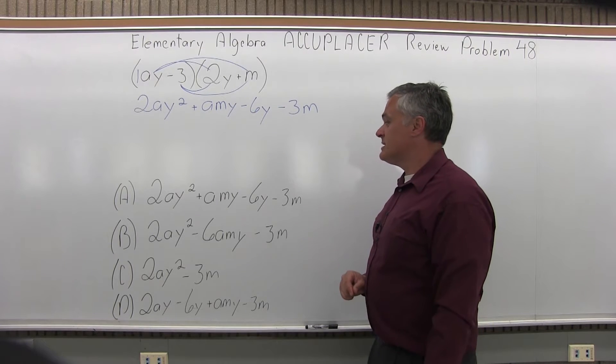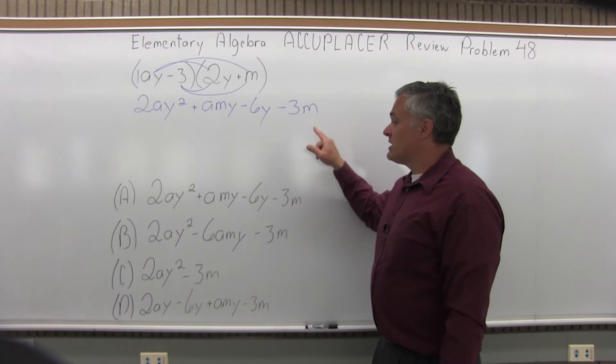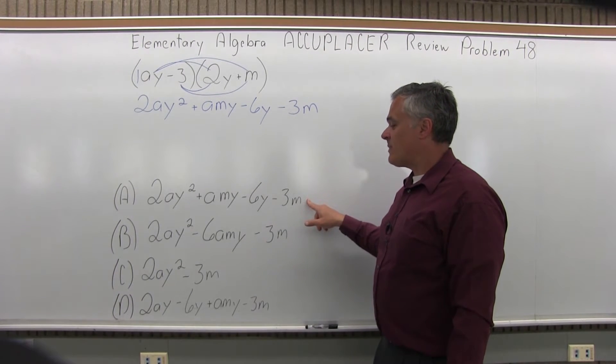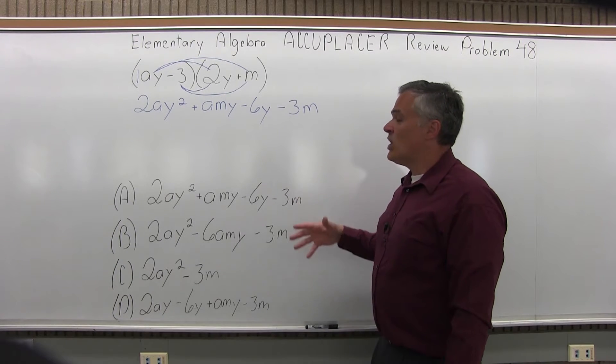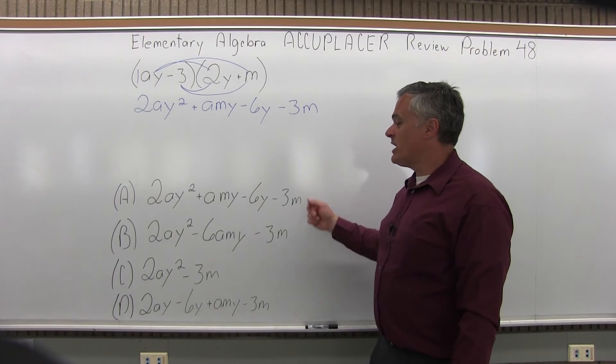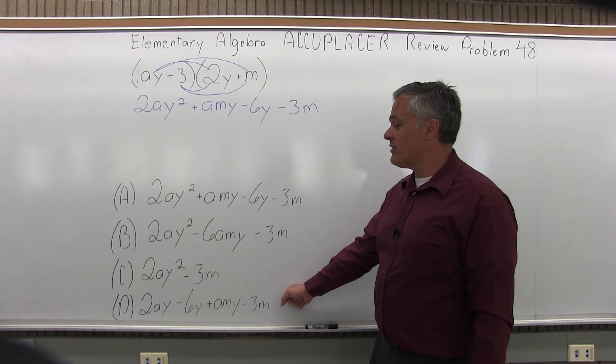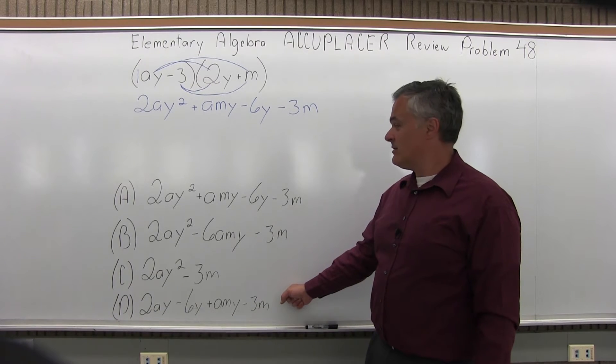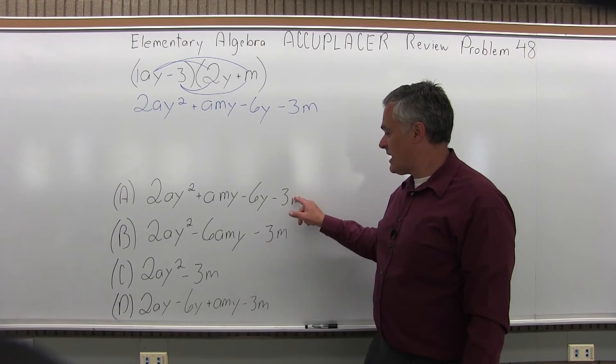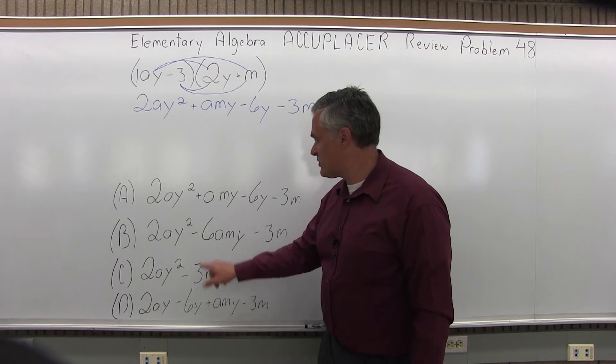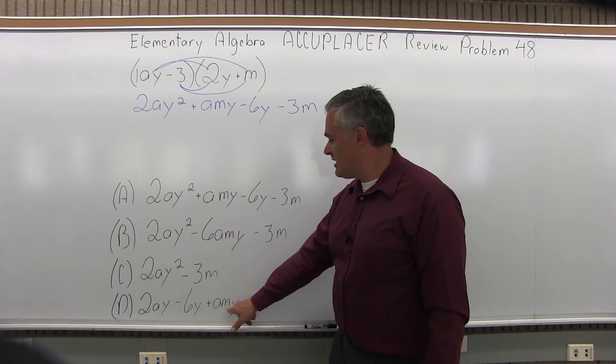Now if I check my options, it is a perfect match for option A. Now again, if you're not paying attention and you go fast, option A and option D rather, looks identical. You have minus 3M, minus 3M, minus 6Y, minus 6Y. AMY looks like AMY. Here's AMY again.